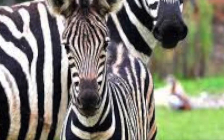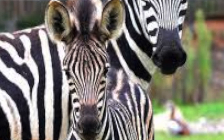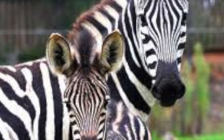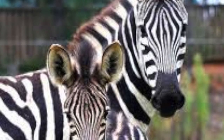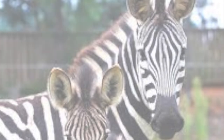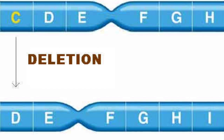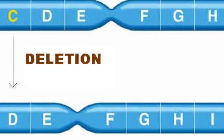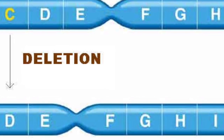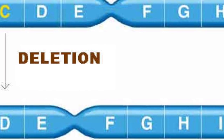Yet Ziggy the zebra still doesn't know why she has light stripes. Ziggy must have undergone a mutation, or change, during transcription and translation. Ziggy went through a frameshift mutation called deletion. Deletion is where a base is removed and all the amino acids after that mutation are different.